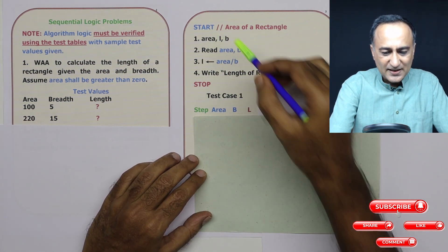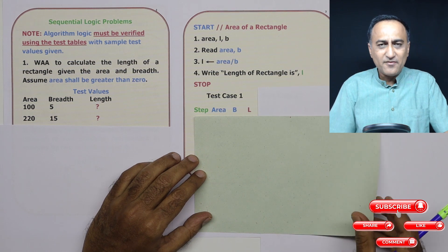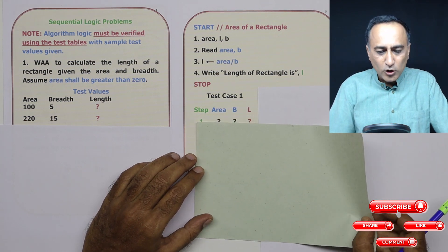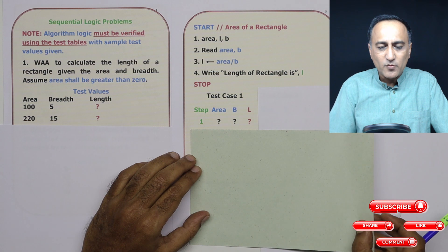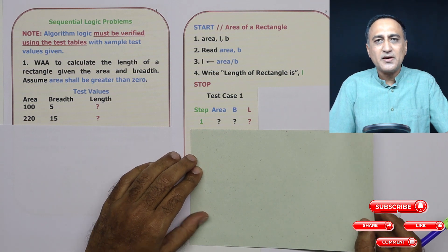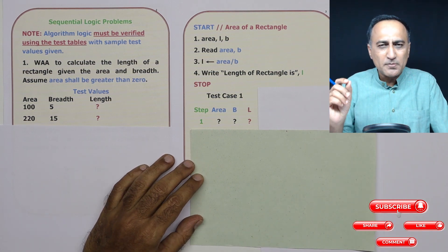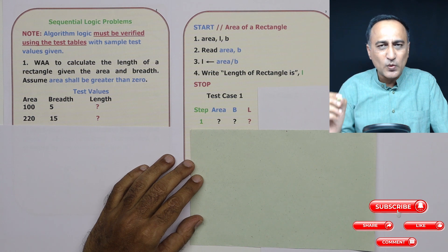Step one: area, L, B. Since I have not given any value, all three will have values assigned by the computer memory.